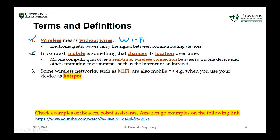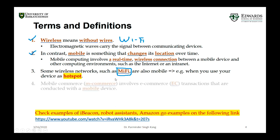There is another term, which is Mi-Fi. You all use Mi-Fi devices — that's when you use your cell phone as a hotspot. Your cell phone exhibits both properties: wireless devices as well as mobile devices. You can connect your laptop with your cell phone when you're in a train or vehicle. It changes its location as well as maintains the connection.